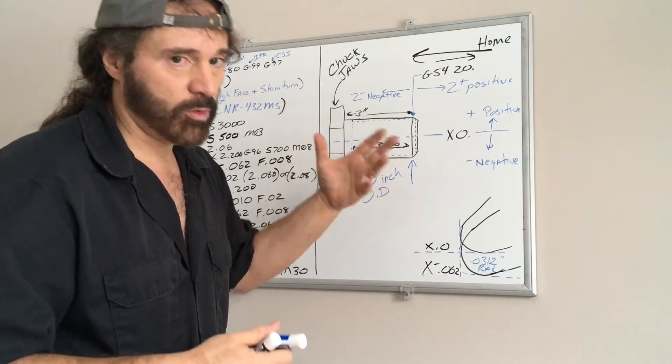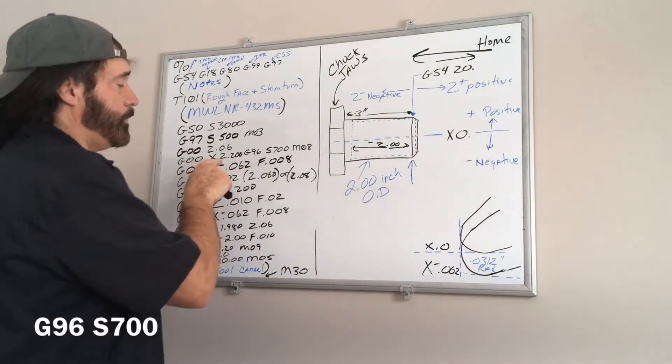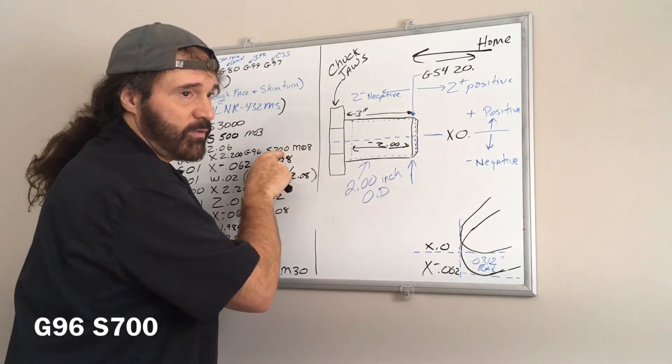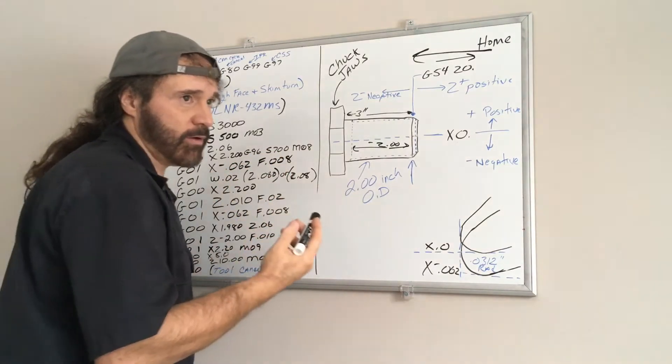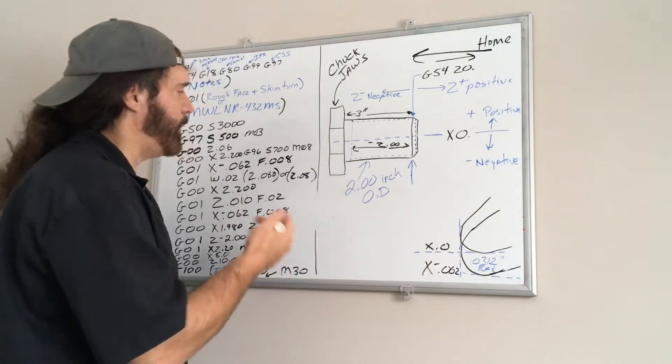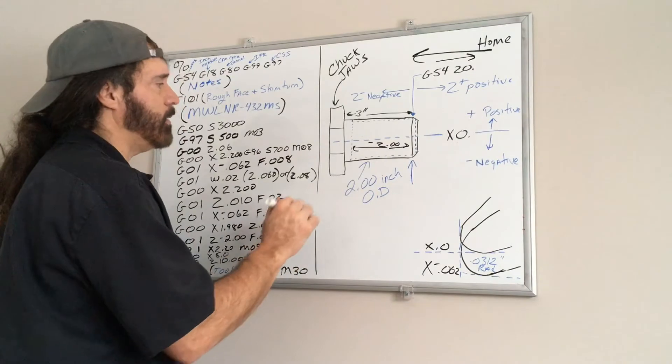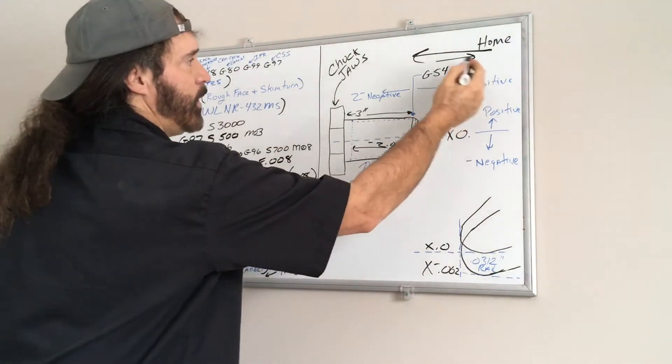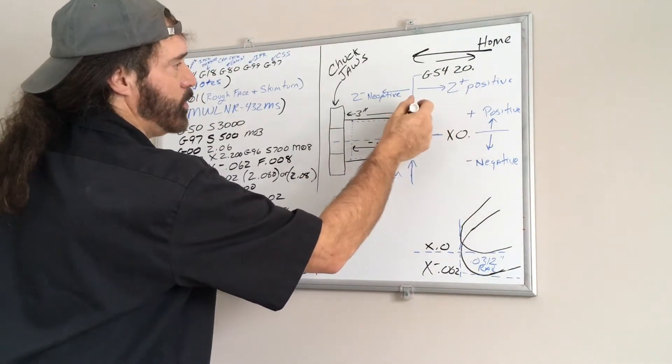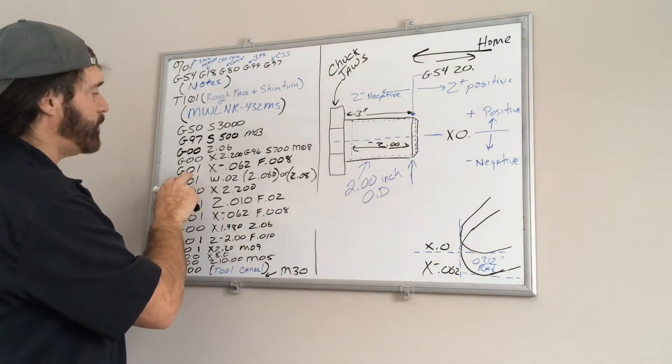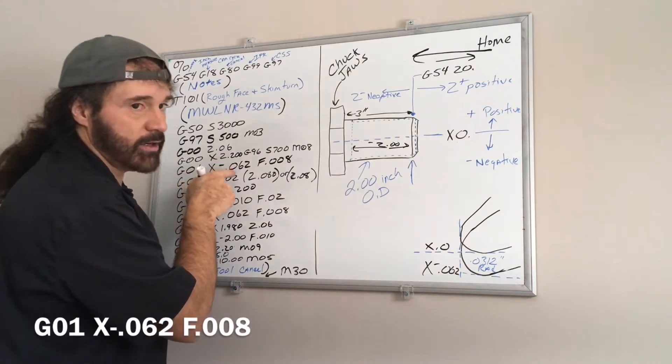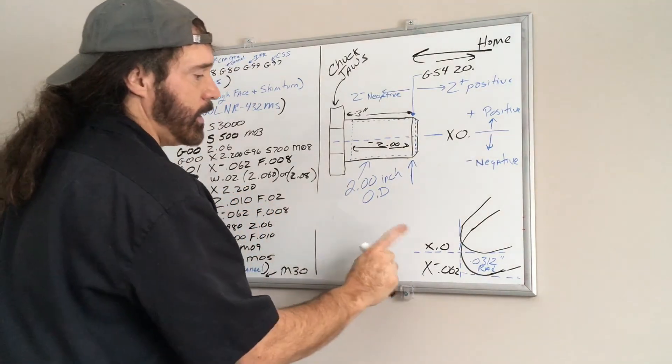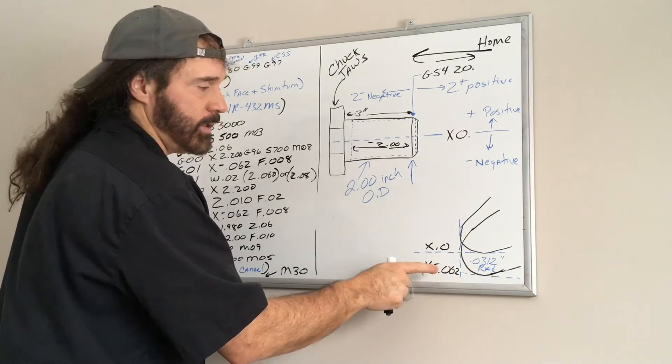Now I'm the G96 S700, that's a constant surface speed value that can vary. When you're cutting aluminum it's usually higher, but I'm just using 700, that's pretty fair. And I'm turning on the coolant which is an M08. So we rapid, we came down above the part, turn the coolant on and we got the constant surface speed on. Now I want to feed X negative 0.062 at a feed rate of 8 thousandths per revolution.